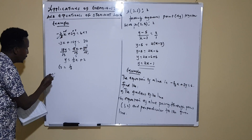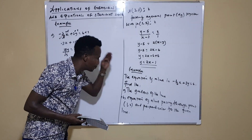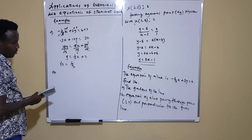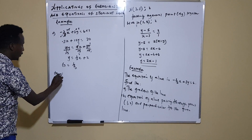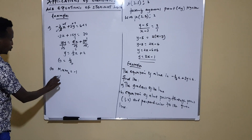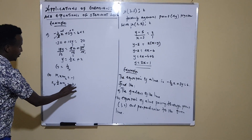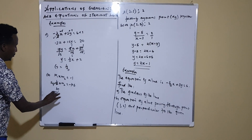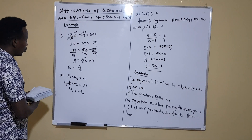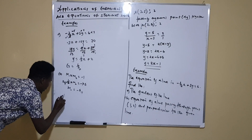For part b, we need the equation of the line passing through point (1, 2) and perpendicular to the given line. We know m1 equals one-fifth. Using m1 times m2 equals negative 1, we substitute: one-fifth times m2 equals negative 1. Multiplying both sides by 5 gives m2 equals negative 5. So the gradient of the perpendicular line is negative 5, and it passes through point (1, 2).